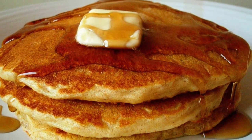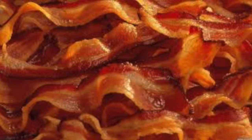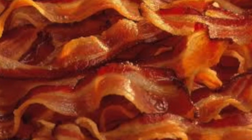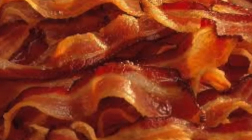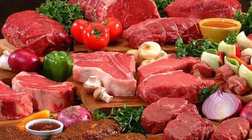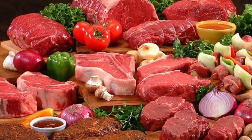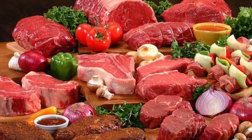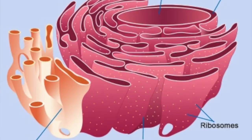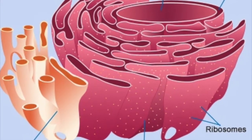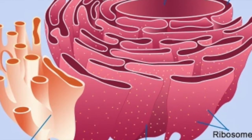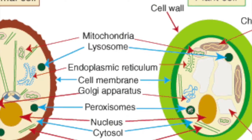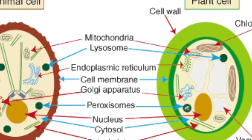Golgi body. The Golgi body looks like a stack of flattened pancakes, or maybe even bacon. The Golgi body packs proteins to send out of the cell. These proteins come from the endoplasmic reticulum. The Golgi body is in all cells.